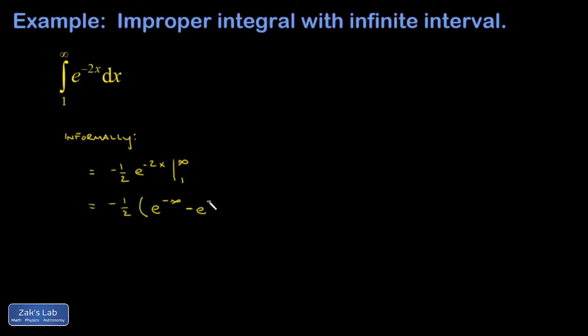Then minus e to the negative 2 times 1. So the interesting question of course is what happens with that infinity: e to the negative infinity. That's the same as 1 over e to the infinity, so 1 divided by some infinite number is going to give me 0, and I'm left with negative 1 half times negative e to the negative 2.